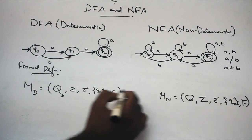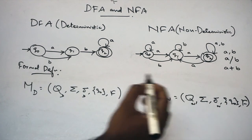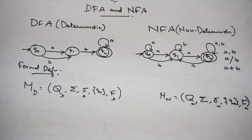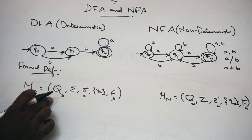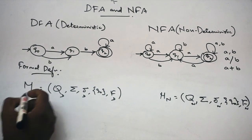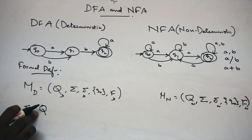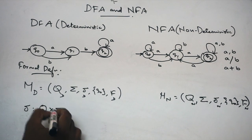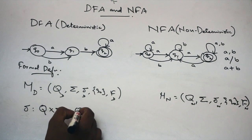Formal definition is consolidated. Q is set of states, alphabets, initial state, final state. Transition function is defined differently. For DFA, Q is set of states — for example Q0, Q1, Q2. The transition function takes a state and an input symbol and gives only one state.